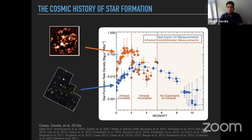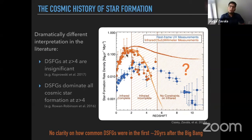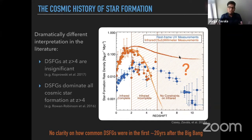The main goal of this work is to constrain the dust-obscured component of the star formation rate density up to redshift 6. One key issue is that the current data cannot distinguish between two different extreme scenarios. In one scenario, dusty galaxies do not contribute significantly above redshift 4, so the star formation rate density is dominated by the unobscured component. In the other scenario, dusty galaxies dominate the star formation rate density even up to redshift 6. Literature works suggest the universe could follow either scenario, and current data cannot distinguish between them.